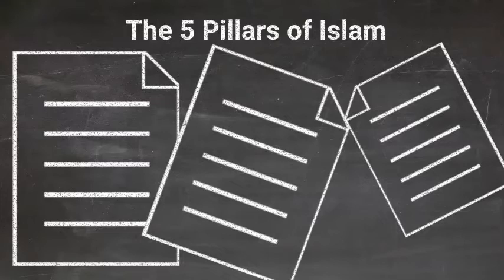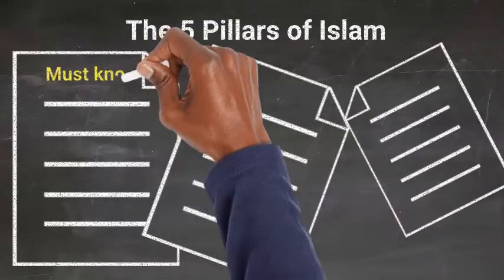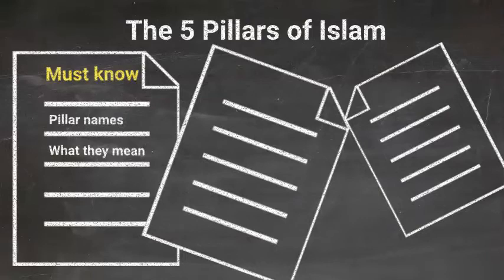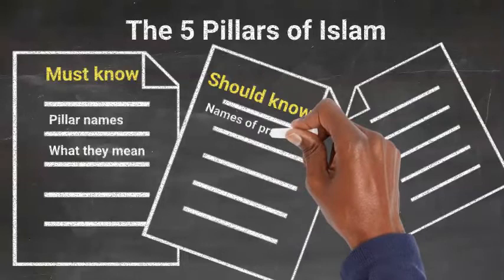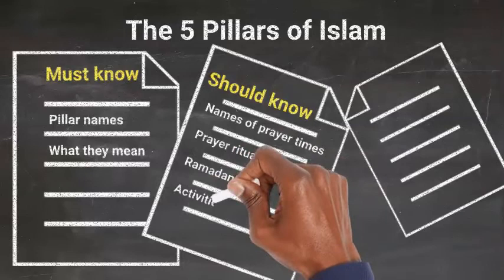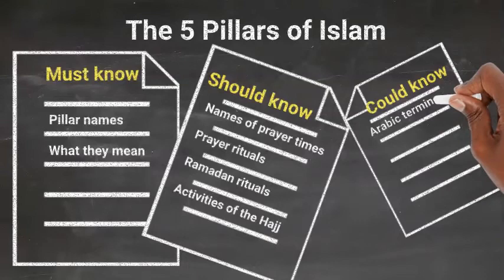Things you must know: the names of the five pillars — Shahada, Salah, Zakat, Saum, and Hajj — and what they mean. Things you should know: the names of prayer times, prayer rituals, Ramadan rituals, and the activities of the Hajj. And things you could know: much of the Arabic terminology of minor aspects of the five pillars, and the variance on the five pillars of different branches of Islam.